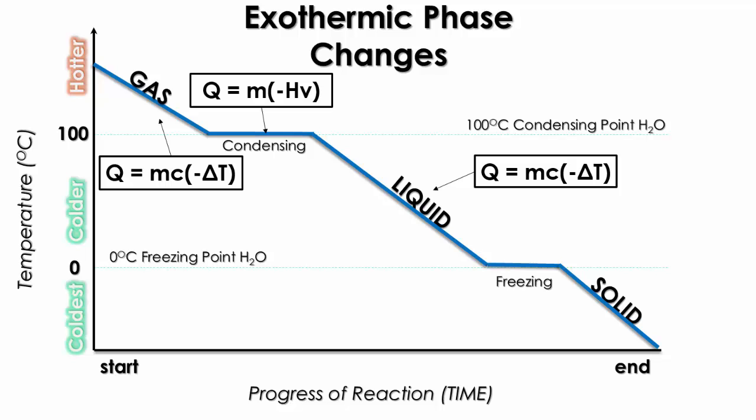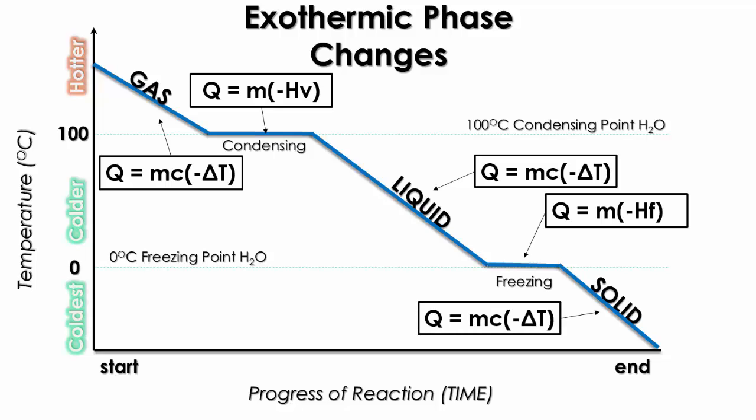When you get to the last phase change — the freezing or solidification point — you're going to be using Q = M(−HF). The amount of heat lost will then make you a solid, and once you return to the solid phase, you can chill the sample further until whatever point is needed or demanded by the problem.